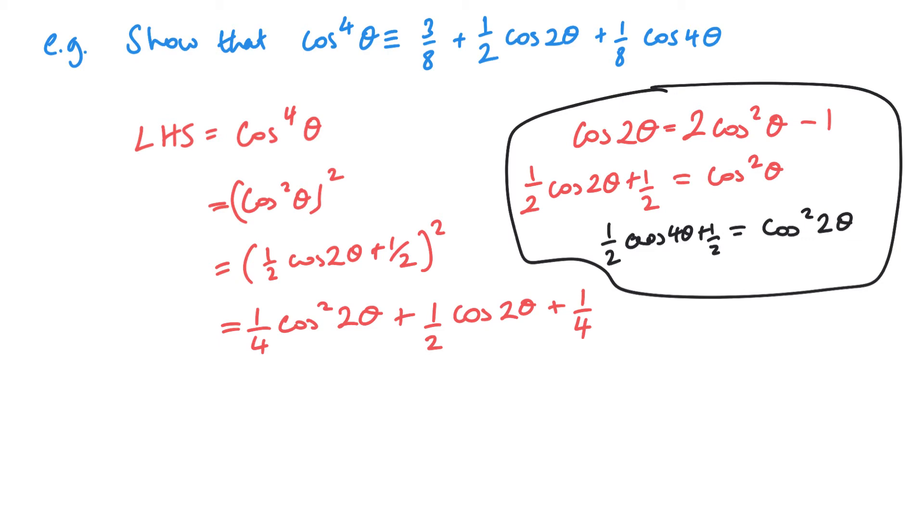So now I've got 1 quarter, and then it's a half cos 4 theta plus a half, plus my half cos 2 theta plus 1 quarter.